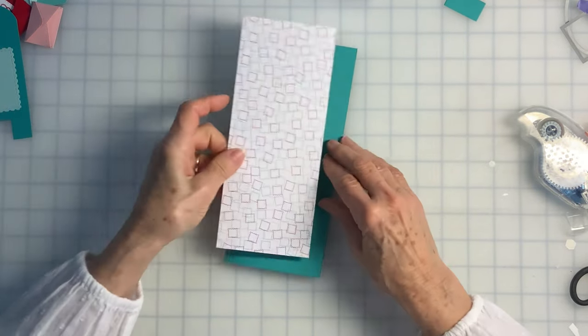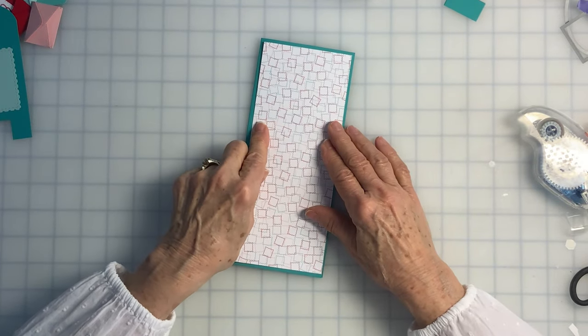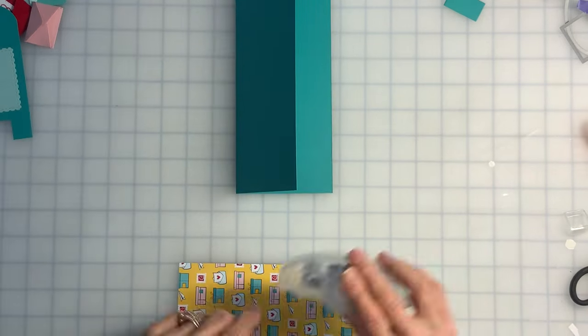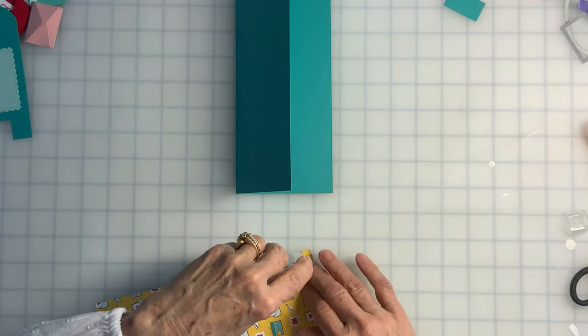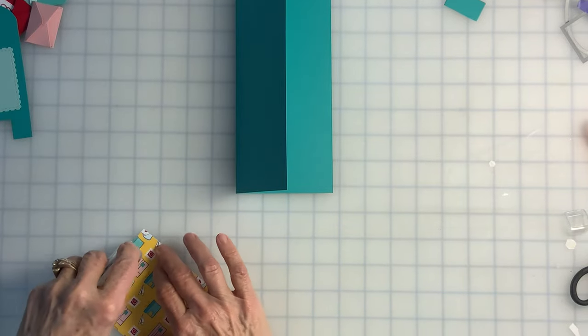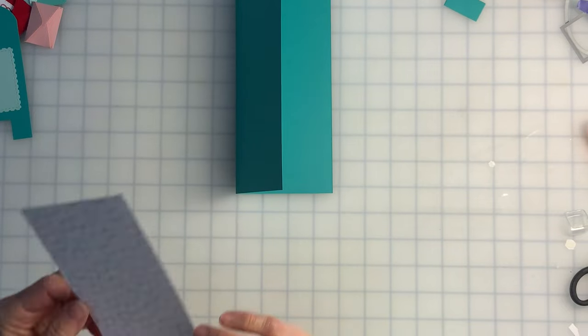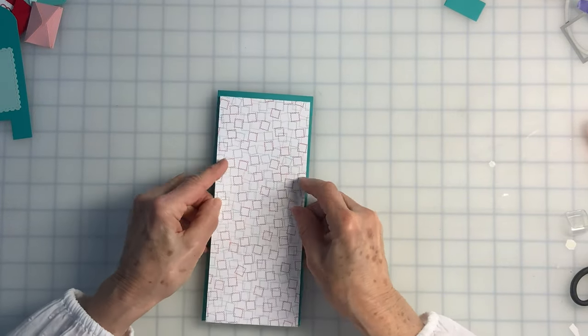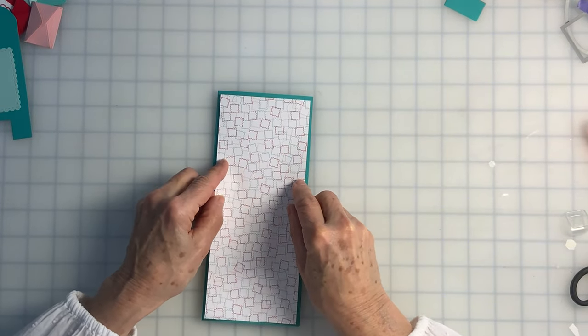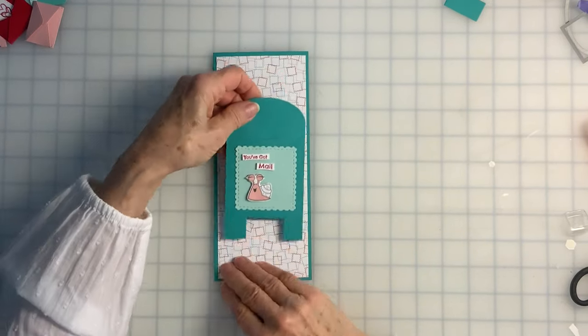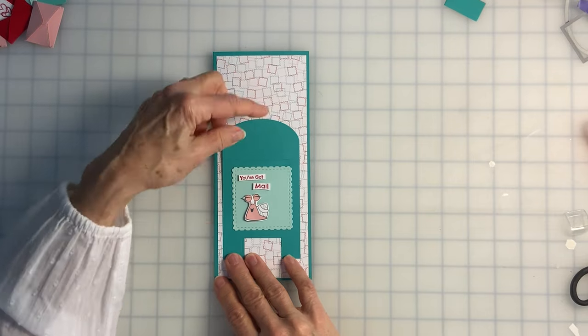My layer for the front of the card is 3 1/2 by 8 1/2. And again, we'll use the Stampin' Seal to attach that. The card front is ready, and now I can put my mailbox in place.